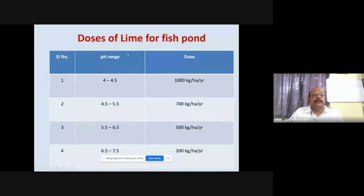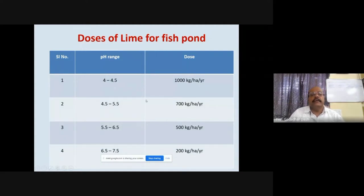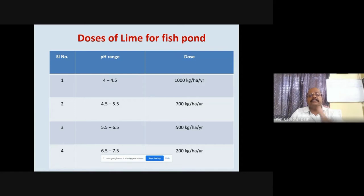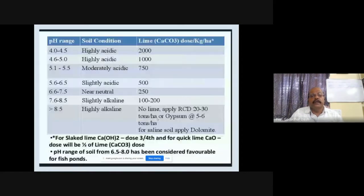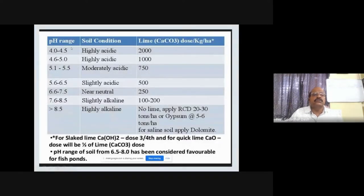Regarding doses of lime: at pH 4 to 4.5, add 1000 kg of lime per hectare per year; pH 4.5 to 5.5 requires 700 kg/ha/year; pH 5.5 to 6.5 requires 500 kg/ha/year. The higher the pH, the lower the dose of lime required. For highly acidic soil conditions, up to 2000 kg of calcium carbonate per hectare may be required. Similarly, with increasing pH, lime requirements are reduced.